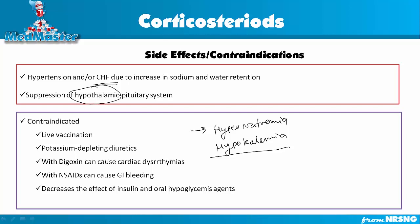You do not want to give corticosteroids with digoxin because it can cause cardiac arrhythmia. Digoxin's mechanism of action is based on sodium, potassium, and calcium concentration. If this medication causes hypokalemia, you need to be very cautious giving digoxin as it can cause digoxin toxicity and cardiac arrhythmia. With NSAIDs (non-steroidal anti-inflammatory drugs), it can cause GI bleeds. Also, this medication decreases the effect of insulin and oral hypoglycemic agents because it already increases glucose levels and decreases insulin effectiveness, causing more hyperglycemia.